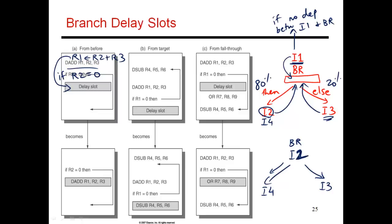Now consider moving I2 into the branch delay slot, where I2 modifies register R4. If you go along the then path, there's no problem — you're executing something useful. But if you go along the else path, I execute I2 and modify R4. If I3 were to read R4, that's a problem because R4 has been changed by an instruction I was not supposed to execute. So I can move I2 into the branch delay slot only if the register it modifies — R4 — is dead anyway. If it contains garbage, then executing I2 doesn't change that condition; it still contains garbage.